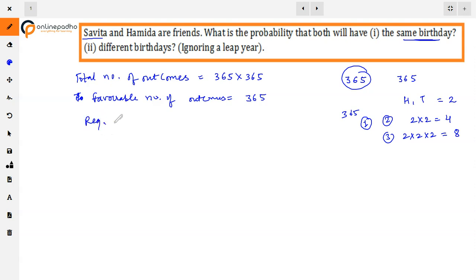So according to our required probability, it will be favorable outcome divided by total number of outcomes. That is 365 divided by 365 into 365. Cancel out, so the answer will be 1 upon 365. This is the probability of having a birthday on the same day. Now, in the second part, we need different birthdays.